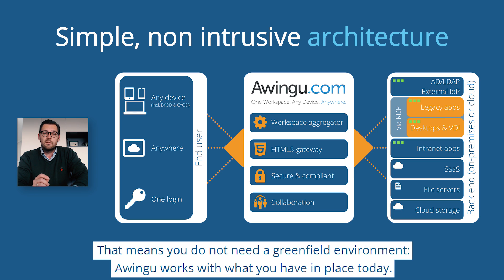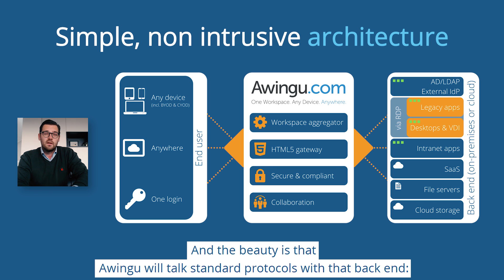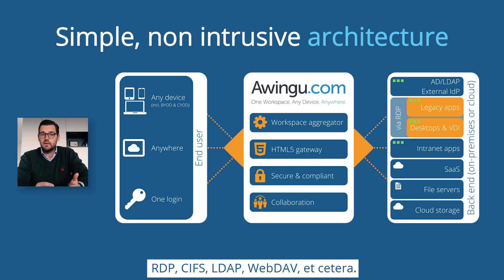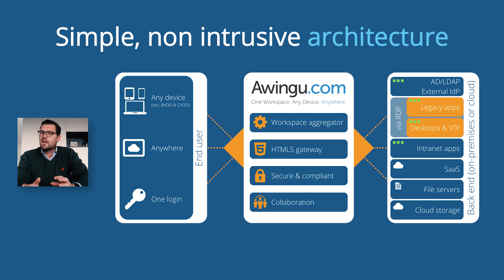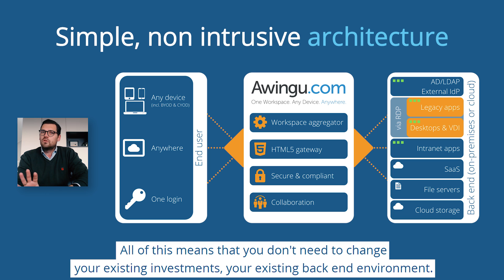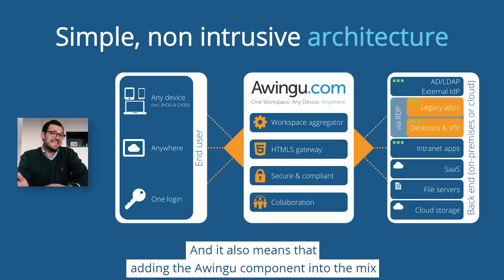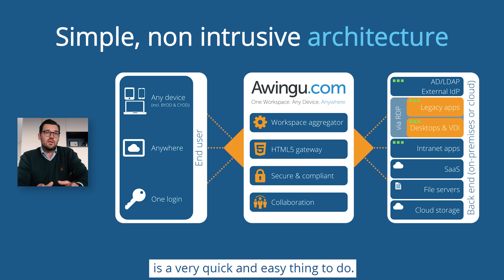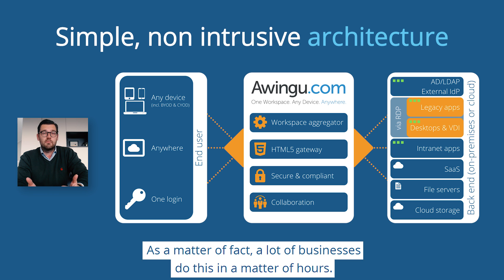Owingo is a gateway that you put in front of your existing backend environment — that means you do not need a greenfield environment. Owingo works with what you have in place today, and it will talk standard protocols with that backend: RDP, CIFS, LDAP, WebDAV, etc. All of this means you don't need to change your existing investments, and adding the Owingo component is a very quick and easy thing to do — a lot of businesses do this in a matter of hours.